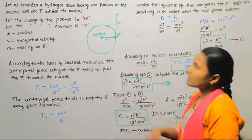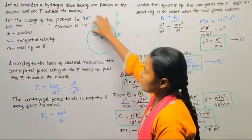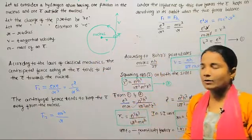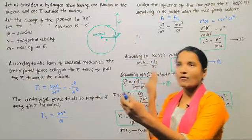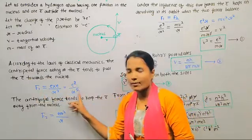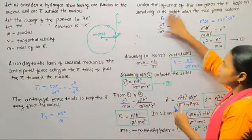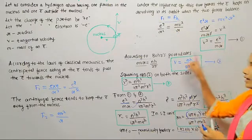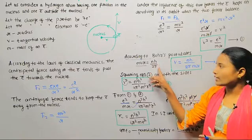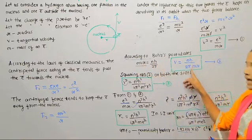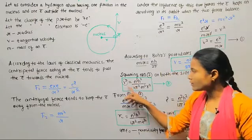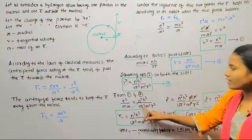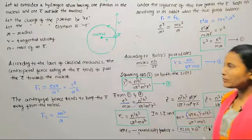So this is about the derivation. To summarize: proton charge is plus E, electron charge is minus E, r is the radius, phi is the tangential velocity, m is the mass of the electron. One force is centripetal force and another one is centrifugal force. F1 is equal to e square by r square, F2 is equal to mv square by r. Balancing these two forces, F1 equals F2, and finally we get v square equal to e square by mr. According to Bohr's postulates, mvr equals nh by 2 pi, so phi equals nh by 2 pi mr. Squaring both sides gives phi square equal to n square h square divided by 4 pi square m square r square. Equating the two phi square expressions finally gives us r_n.